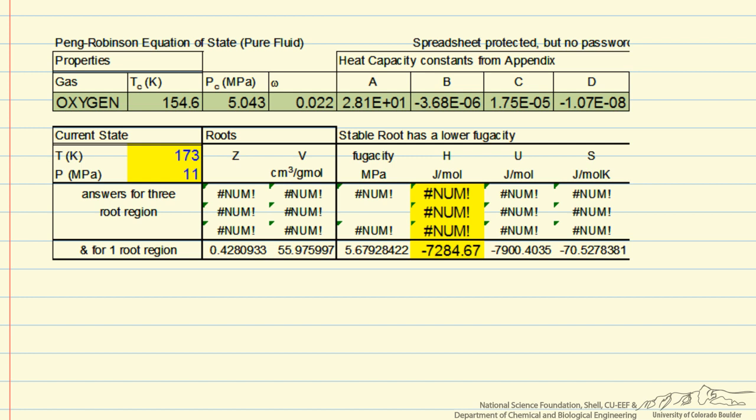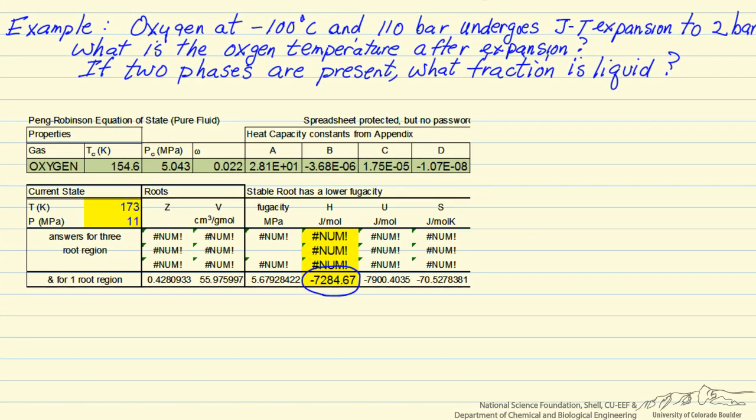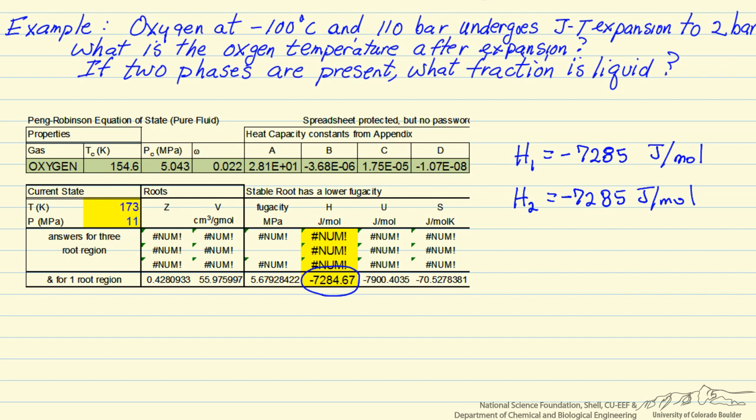And we see that the incoming enthalpy is minus 72.85, essentially. So this means that H2, the enthalpy leaving, is also minus 72.85 Joules per mole. We have this expansion, H1 and leaving H2. So we want to use now the same spreadsheet and put in the new pressure and try and determine the temperature.